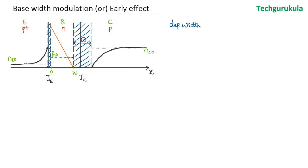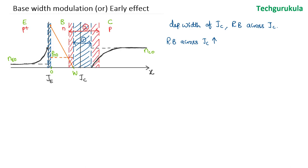In this case, the depletion width of the collector junction depends on the reverse bias voltage applied across it. If we increase the reverse bias voltage across the collector junction, the depletion width would increase, which would result in the effective base width reducing. In the initial case, we had the base width as W. When the reverse bias across the collector junction is increased, the base width would become W prime, which is reduced. As the depletion region in the collector junction increases, the effective base width reduces.